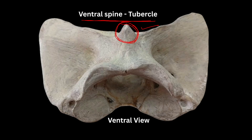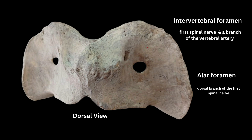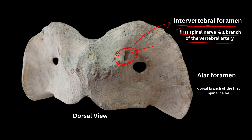At the cranial aspect and the dorsal part of each wing there are two foramina. The medial foramen is the intervertebral foramen — it is for the passage of the first spinal nerve and a branch of the vertebral artery.